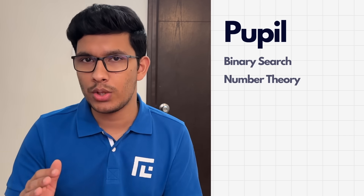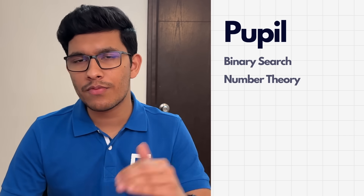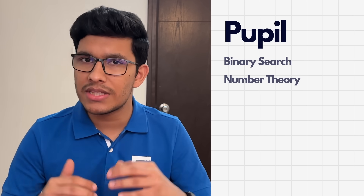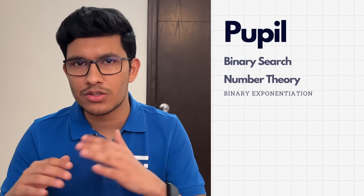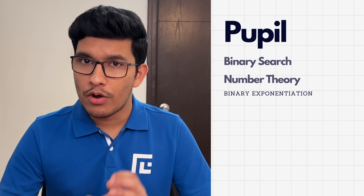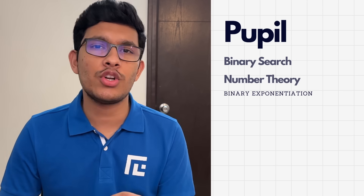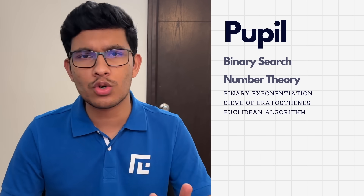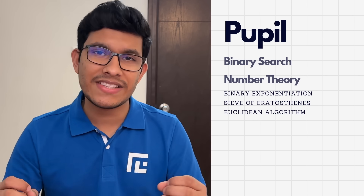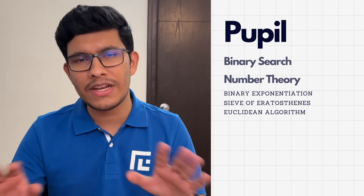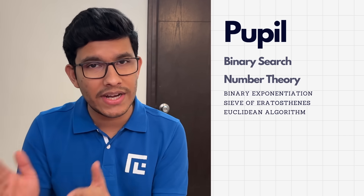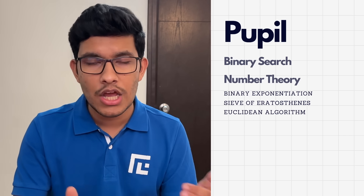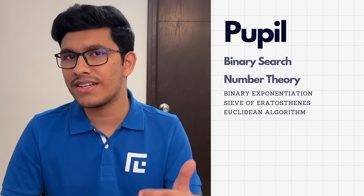The next topic is advanced number theory. While you were a newbie you learned basic concepts like primes and divisors, but now you need to level up. As a pupil you should focus on the Sieve of Eratosthenes and the Euclidean algorithm. These two topics are very important and you will see so many problems that are simple variations of them, so make sure you master these topics.